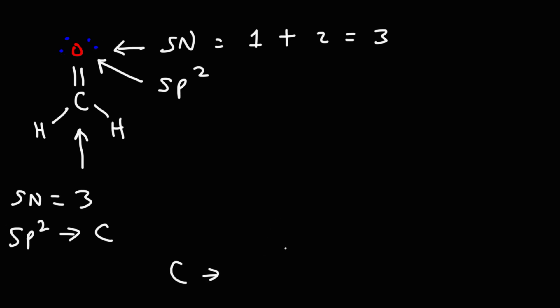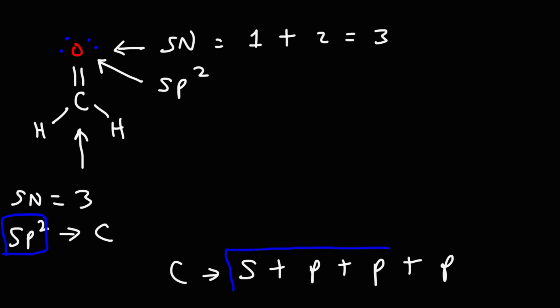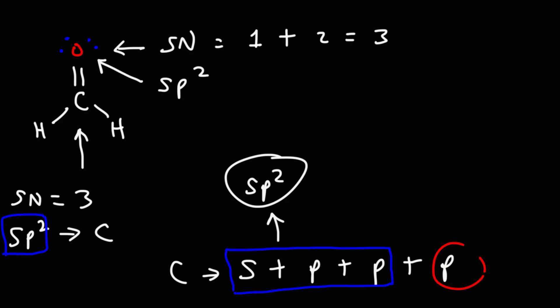Carbon has one s orbital and three p orbitals. Because this carbon is sp2 hybridized, it took its s orbital and two of its three p orbitals to create the three hybrid sp2 orbitals, leaving one empty p orbital. The same is true for oxygen. Those empty p orbitals are used to form the pi bond in the carbonyl group.